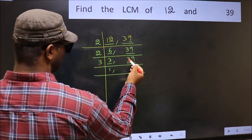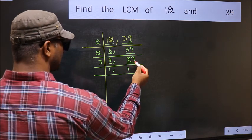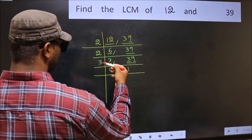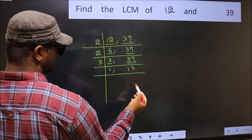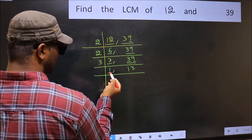First number 3. When do we get 3 in the 3 table? 3 goes into 3 once. The other number 9. When do we get 9 in the 3 table? 3 times 3 is 9.